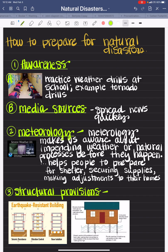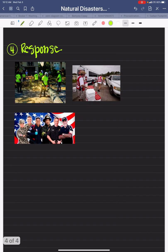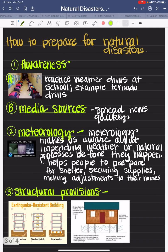Lots of people in California, for example, have to evacuate because of forest fires. There are some natural processes on Earth that can be devastating and have catastrophic effects on human life. Fortunately, humans are finding ways to help reduce the impact of these processes. There are four different things happening in our world to help us prepare for natural disasters.